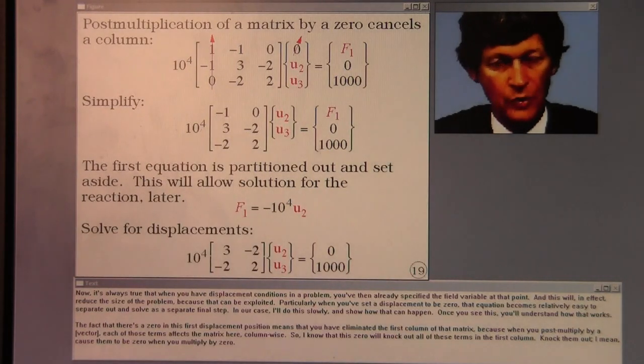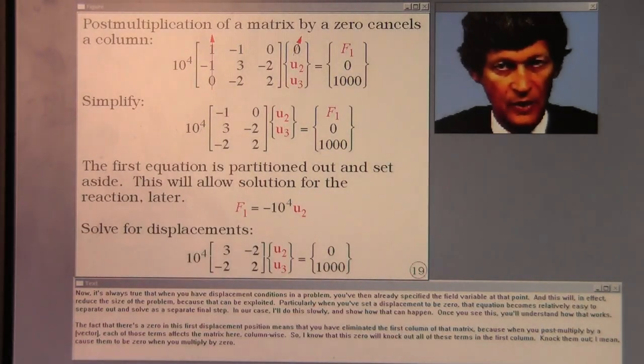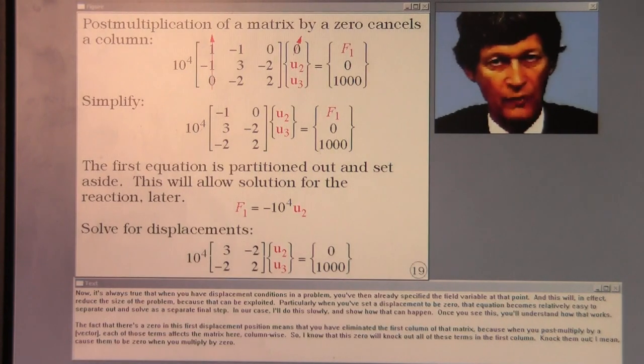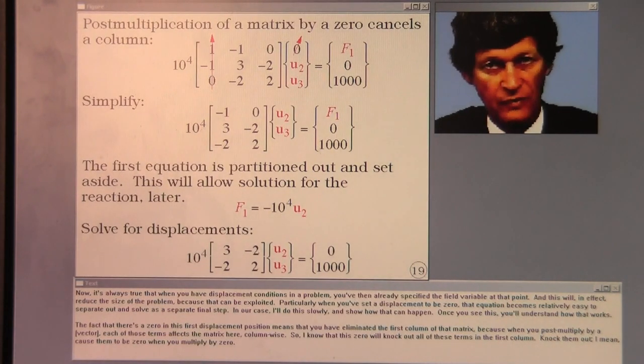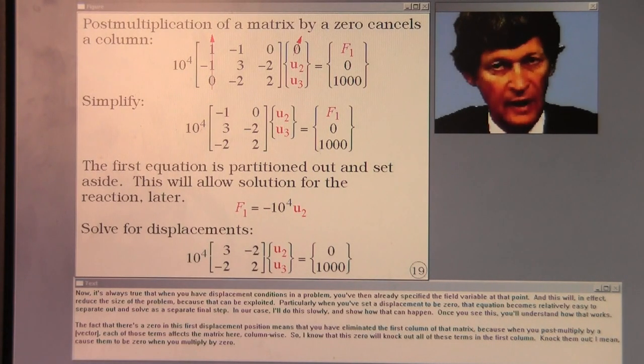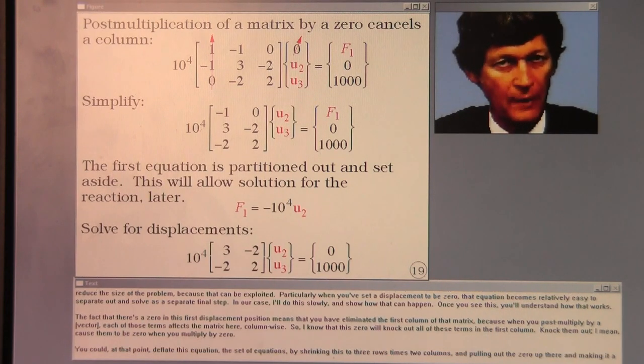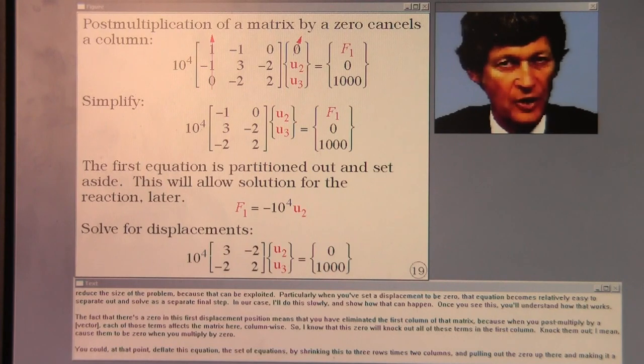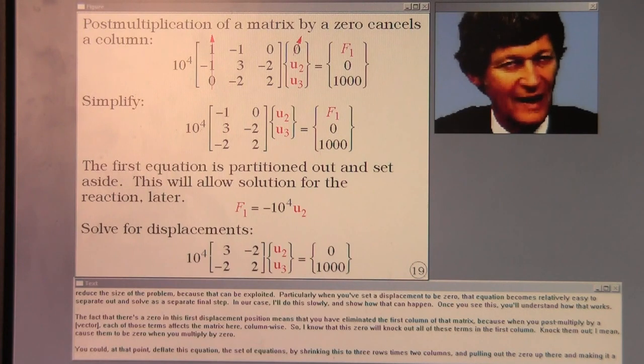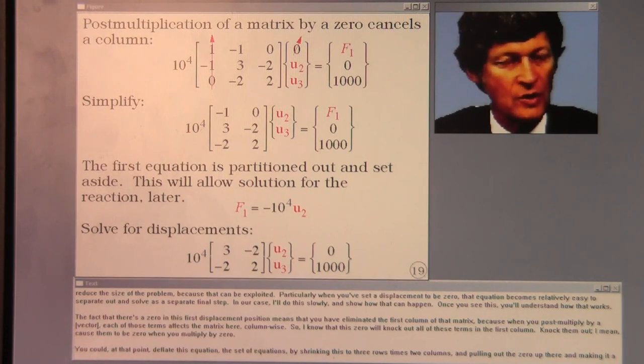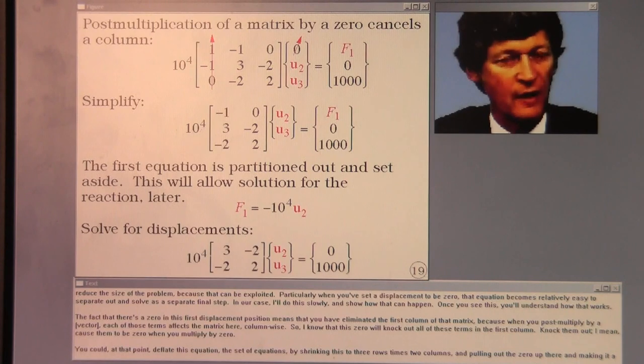Now, it's always true that when you have displacement conditions in a problem, you've already specified the field variable at that point. And this will, in effect, reduce the size of the problem because that can be exploited. Particularly when you set a displacement to be zero, that equation becomes relatively easy to separate out and solve as a separate final step.